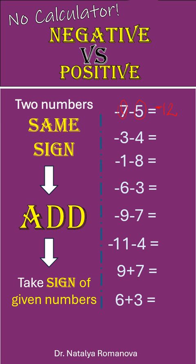Negative 3 minus 4. We take 3 plus 4, it is 7, keep the common sign, minus 7. Negative 1 minus 8. We must add because the same sign, minus minus.